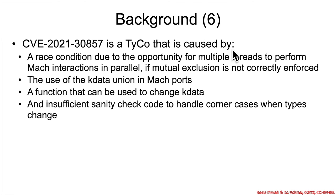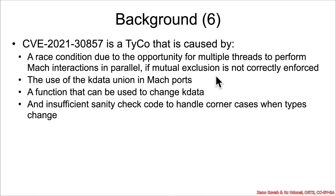This vulnerability is a type confusion caused by a race condition. In Mach, multiple user space threads can send Mach messages in parallel, and if context switching occurs where there's inadequate mutual exclusion, a race condition results. Locks are used to address this but are not applied correctly here. Additionally, there's a kdata union inside the Mach port structure — a union of various pointers — which can become type-confused when a function swaps out the kdata from underneath code running in that race condition.